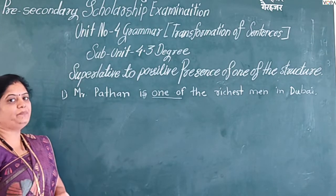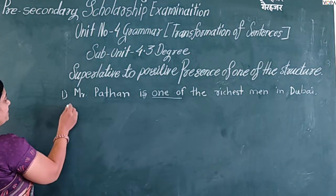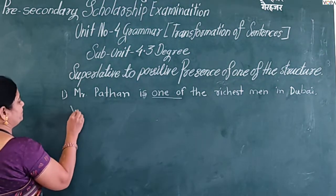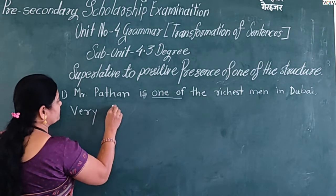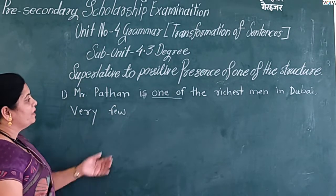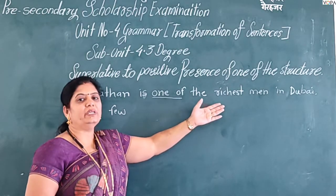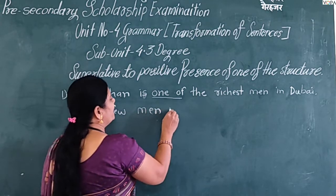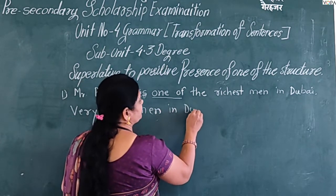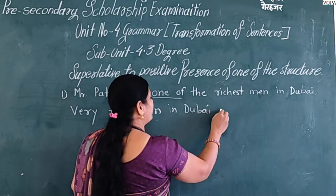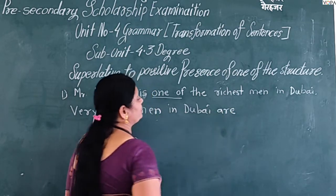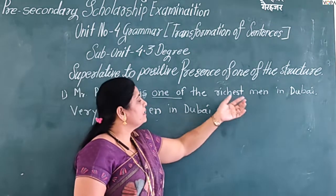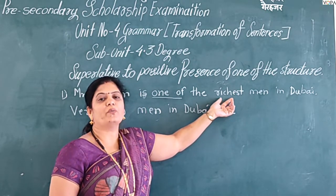How to change? Let's start. At first, we start the sentence with 'very few.' Then, we take the common noun in the sentence — men in Dubai — followed by 'as...as' and the positive form of the adjective.